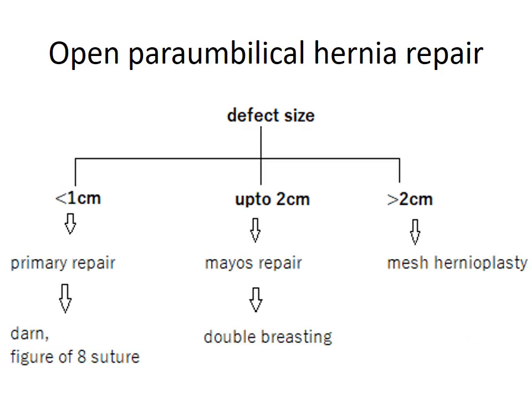Open para-umbilical hernia repair depends upon the defect size. For defects less than 1 cm: primary repair with darn figure-of-8 suture. Up to 2 cm: Mayo's repair with double breasting. More than 2 cm: mesh hernioplasty is performed.